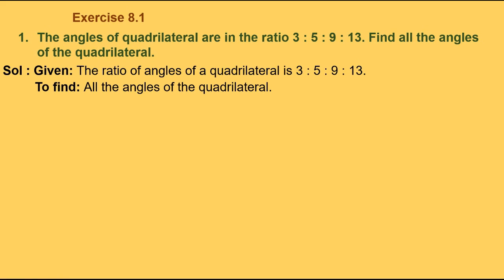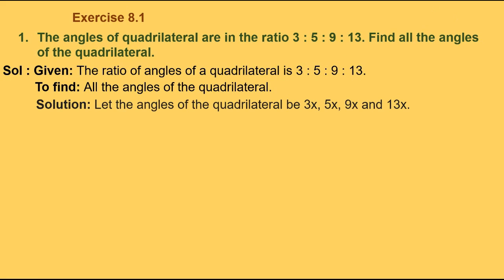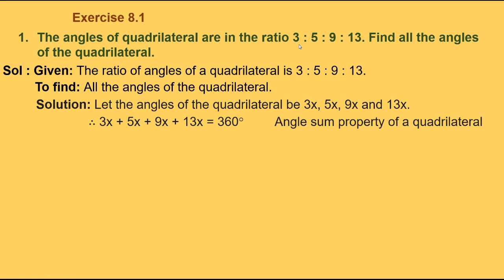Find all the angles of the quadrilateral. To solve, let the angles of the quadrilateral be 3x, 5x, 9x, and 13x. Therefore, 3x plus 5x plus 9x plus 13x will be equal to 360 degrees, by the angle sum property of a quadrilateral. Adding 3x + 5x + 9x + 13x, we get 30x. So 30x equals 360 degrees.